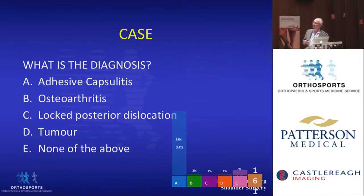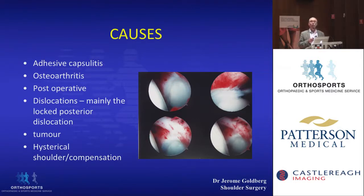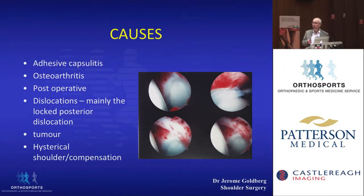It is adhesive capsulitis. Let's go through the causes of a stiff shoulder. Adhesive capsulitis is by far the most common cause. Osteoarthritis is not common in the shoulder — it's not a weight-bearing joint. Post-operatively, physiotherapists will see many stiff post-operative shoulders. Dislocations can present with loss of active and passive movement. Tumours are very rare. The hysterical shoulder in the compensation patient does occur. In that arthroscopic slide you can see what we see with a frozen shoulder — inflammation of the capsule, the biceps tendon, and other structures.